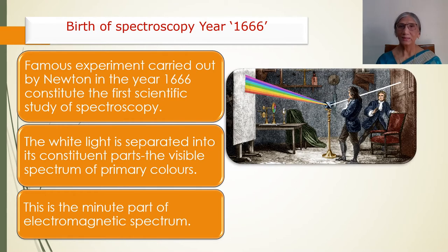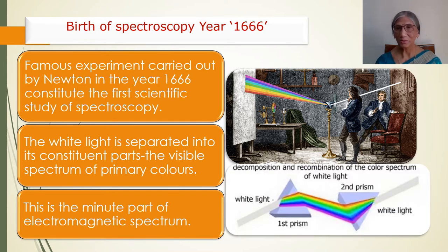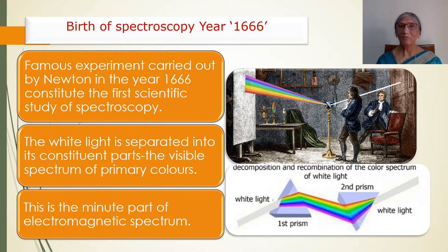In the year 1666, Sir Isaac Newton carried out an experiment. He placed a prism in front of his window from where white light was coming and he reflected this white light through the prism onto a wall. He saw that white light splits up into seven colors: violet, indigo, blue, green, yellow, orange, and red.